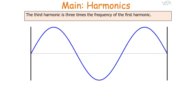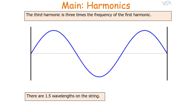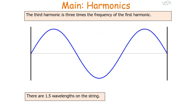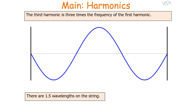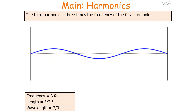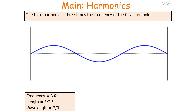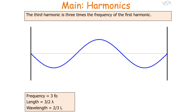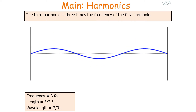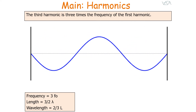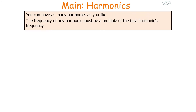The third harmonic is three times the frequency of the first harmonic, and by looking at this diagram there are one and a half wavelengths on the string. The frequency of the third harmonic is three times the frequency of the first harmonic, the length of the string is one and a half wavelengths, and therefore the wavelength is two-thirds the length of the string.